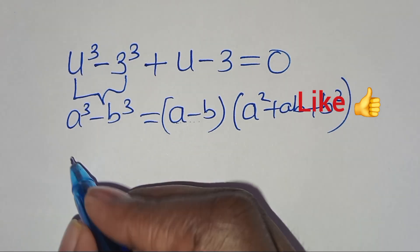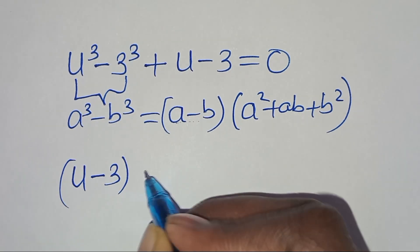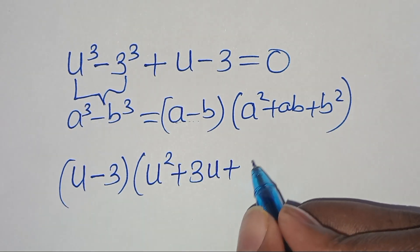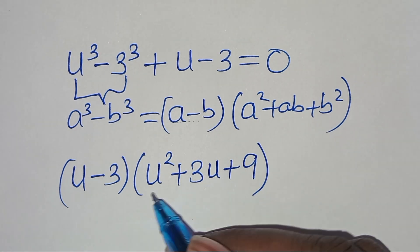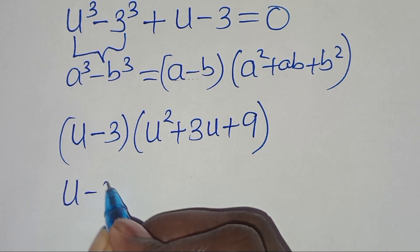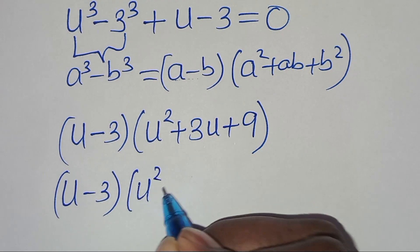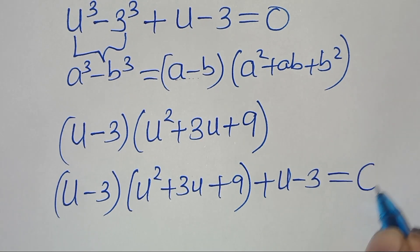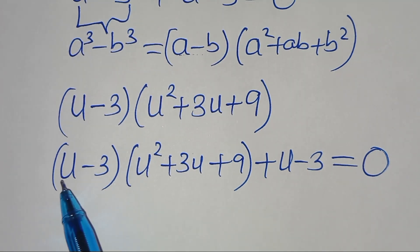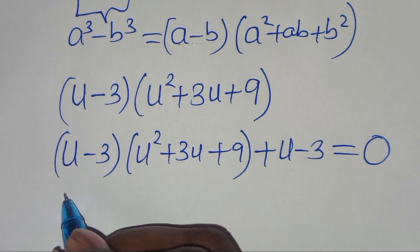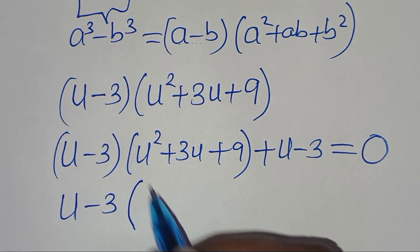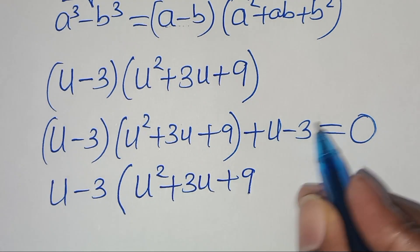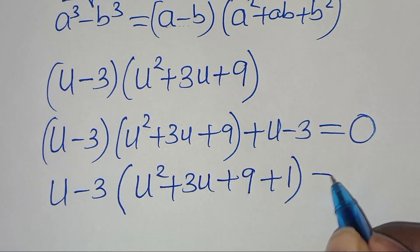Applying this identity, we have u minus 3, then here we have u squared plus 3u, then plus 3 squared, which is 9. So we can express this as u minus 3 times u squared plus 3u plus 9, then plus u minus 3. This is equal to 0. We have a common factor of u minus 3, so inside the parenthesis we have u squared plus 3u plus 9 plus 1, which gives u squared plus 3u plus 10. This is equal to 0.